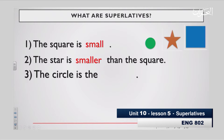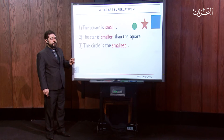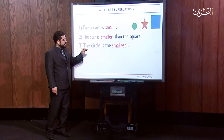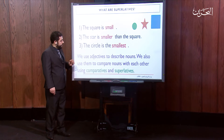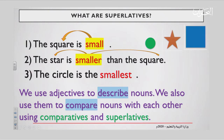Now we have two things to compare, but we can add yet another one. There is the circle. The circle is the smallest. If you compare three items and you would like to say that one is smaller than any other, you can say the circle is the smallest. So we use adjectives like small to describe nouns — small describes square. We also use them to compare, so smaller compares both star and square. We're using comparatives, which is smaller, and superlatives, which is the smallest, comparing circle to any other shape in that area.